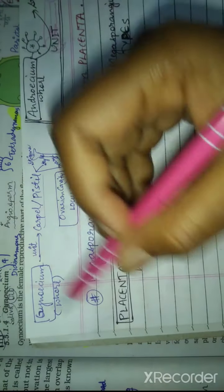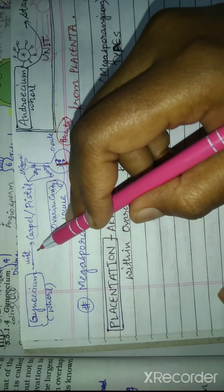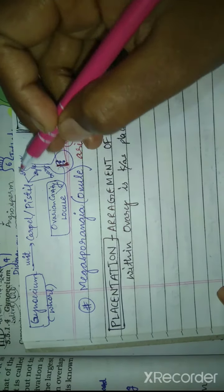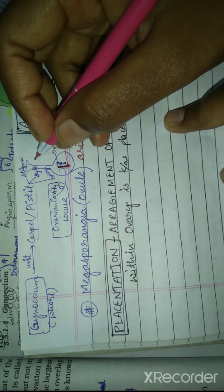Each ovary bears one or more ovules attached to a flattened cushion-like placenta. Gynoecium is a whole unit: carpel or pistil. Now, carpel has three parts - stigma, style, and ovary.